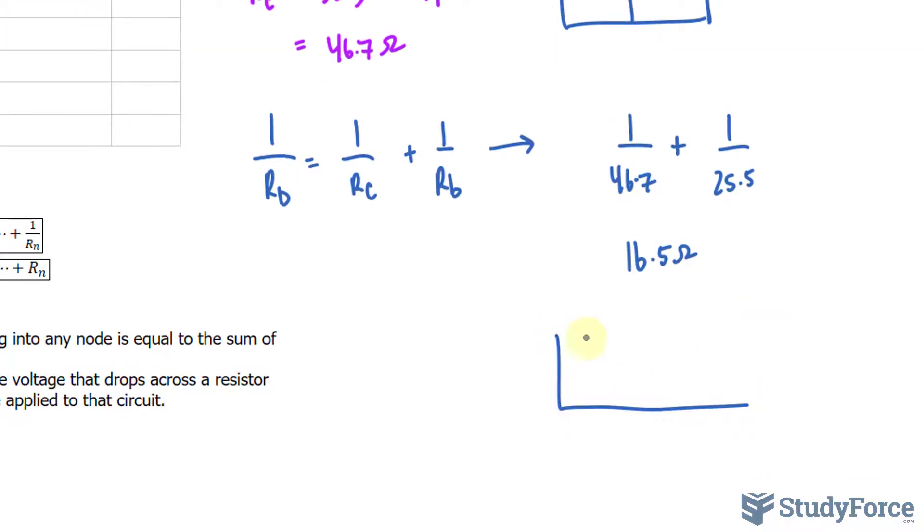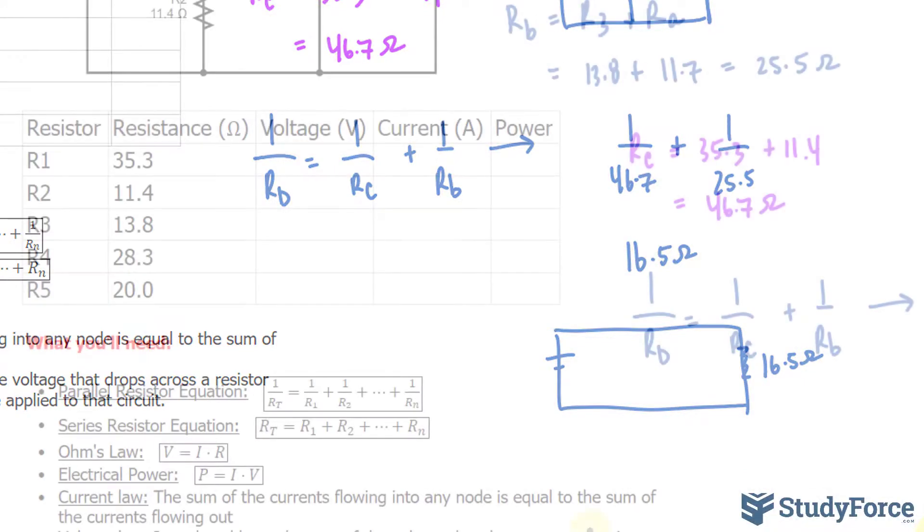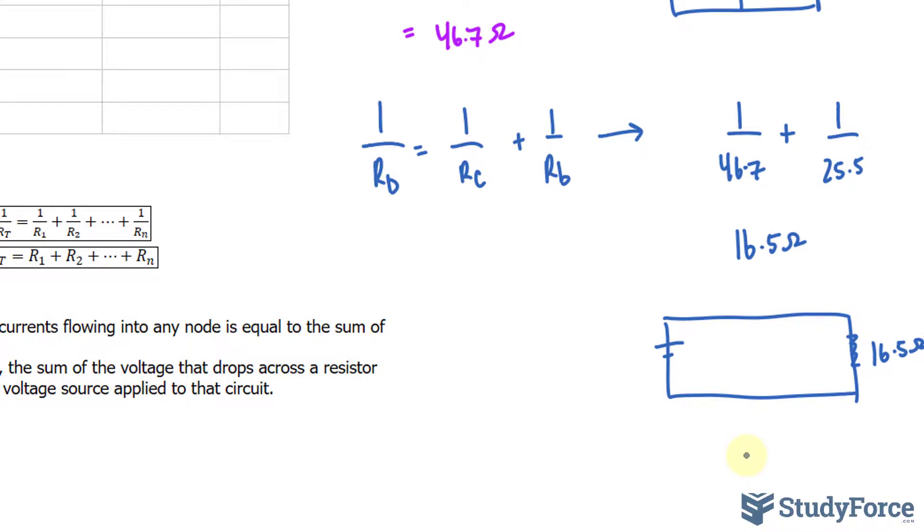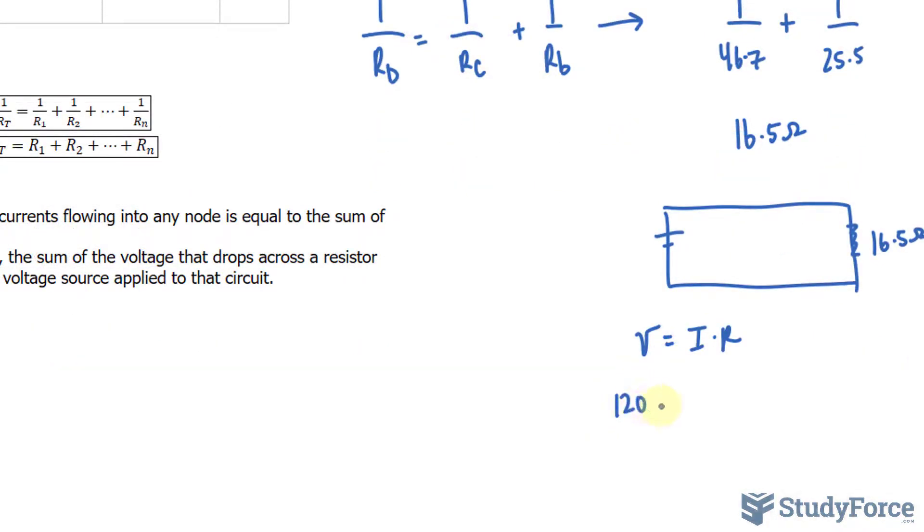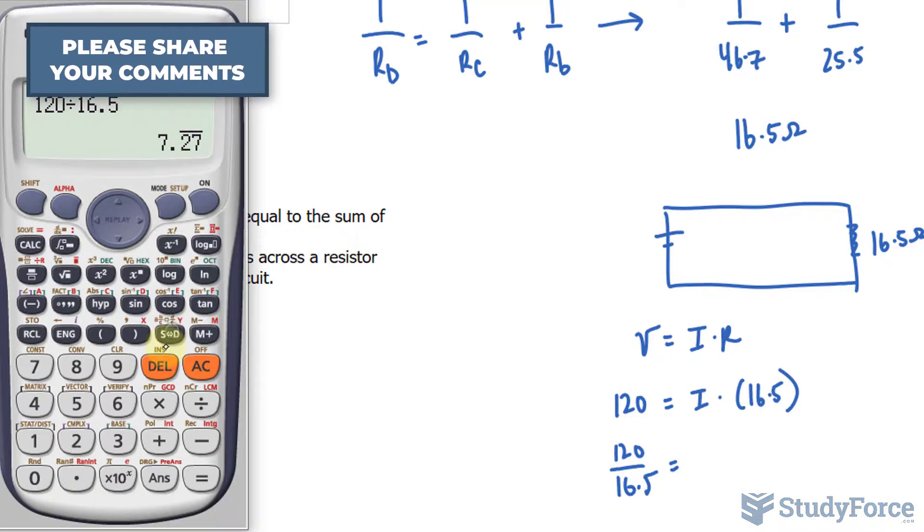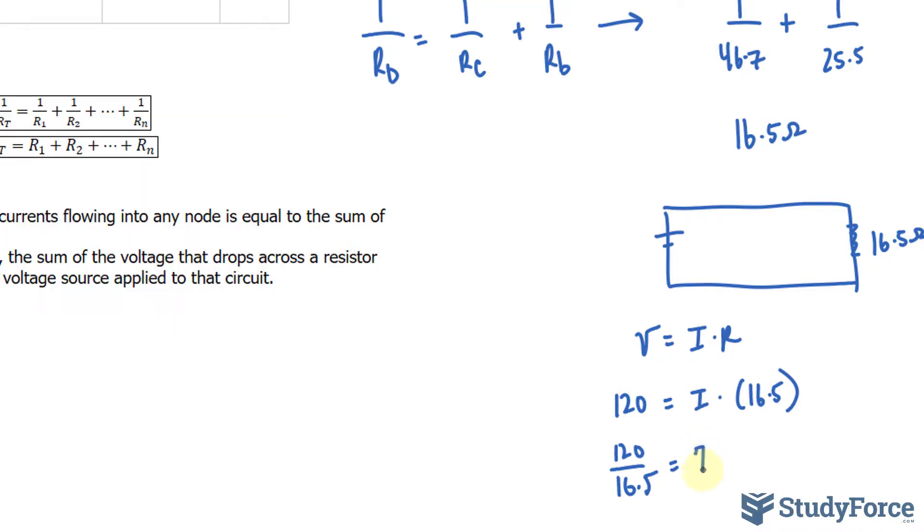So our brand new circuit has been reduced to the power source and one resistor that's 16.5 ohms. Now that's very important for us, because what we can do next is use the formula shown here, Ohm's law, to find out the current that's flowing through this circuit. And the formula is V equals I times R. The voltage is given in the question as 120 volts, and that's equal to the current times the resistance, which is 16.5. We divide both sides by 16.5 to get I, which is the current flowing through that one resistor. 120 divided by 16.5 makes 7.3. 7.3 is the current, and current is measured in amps or amperes.